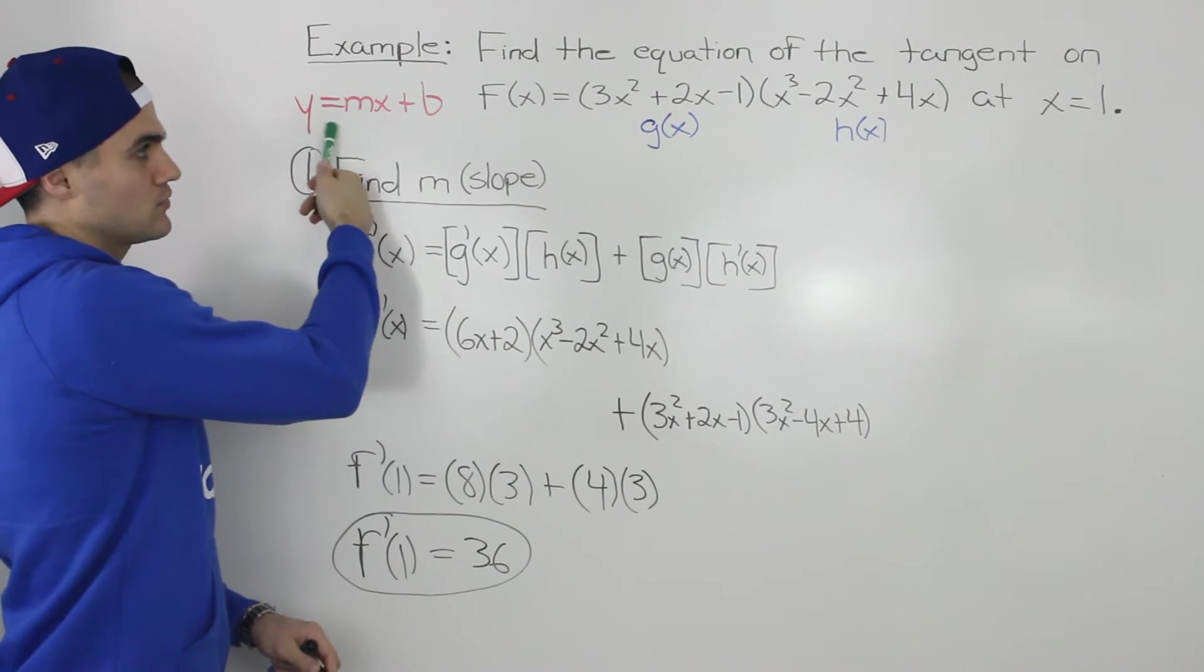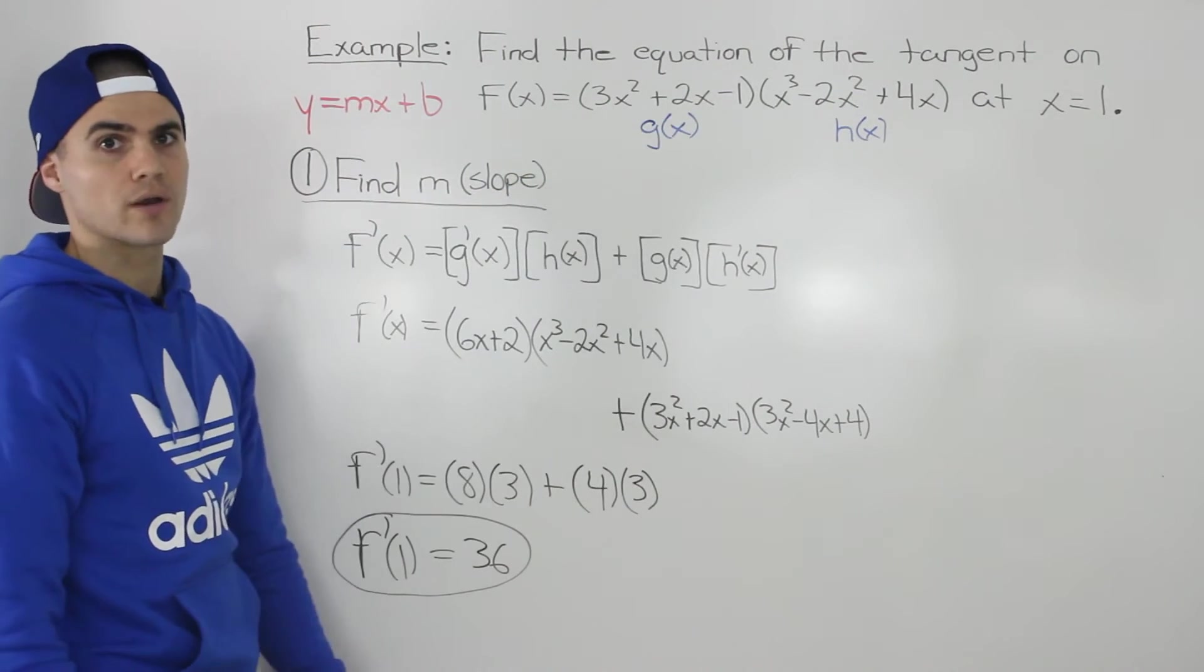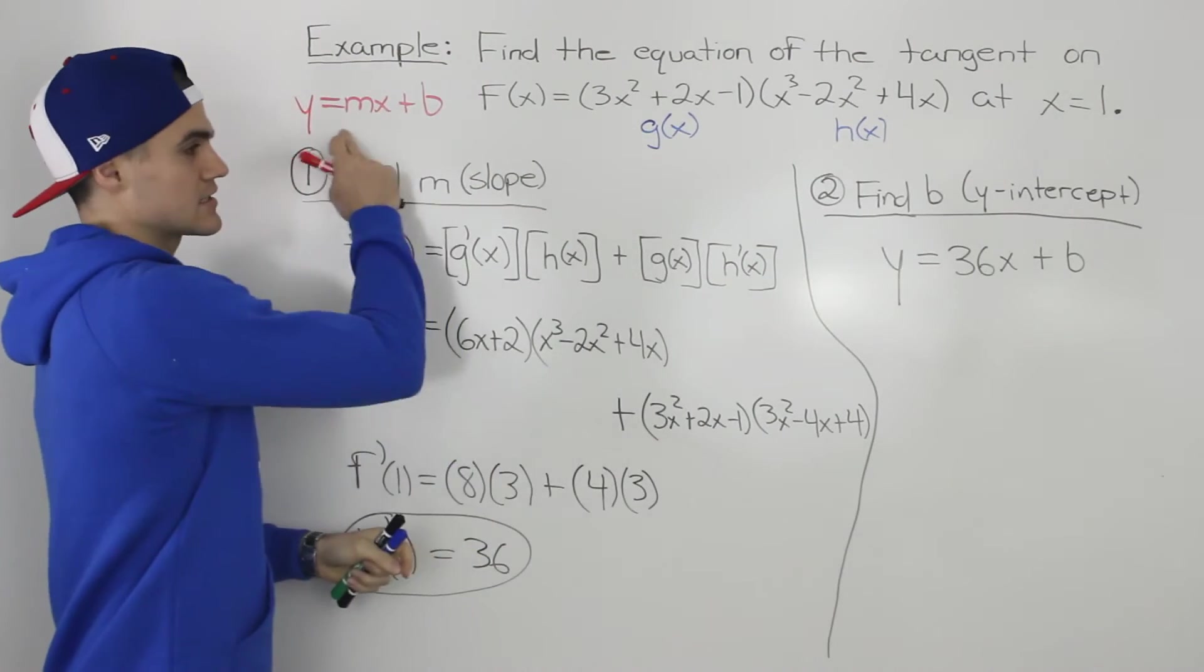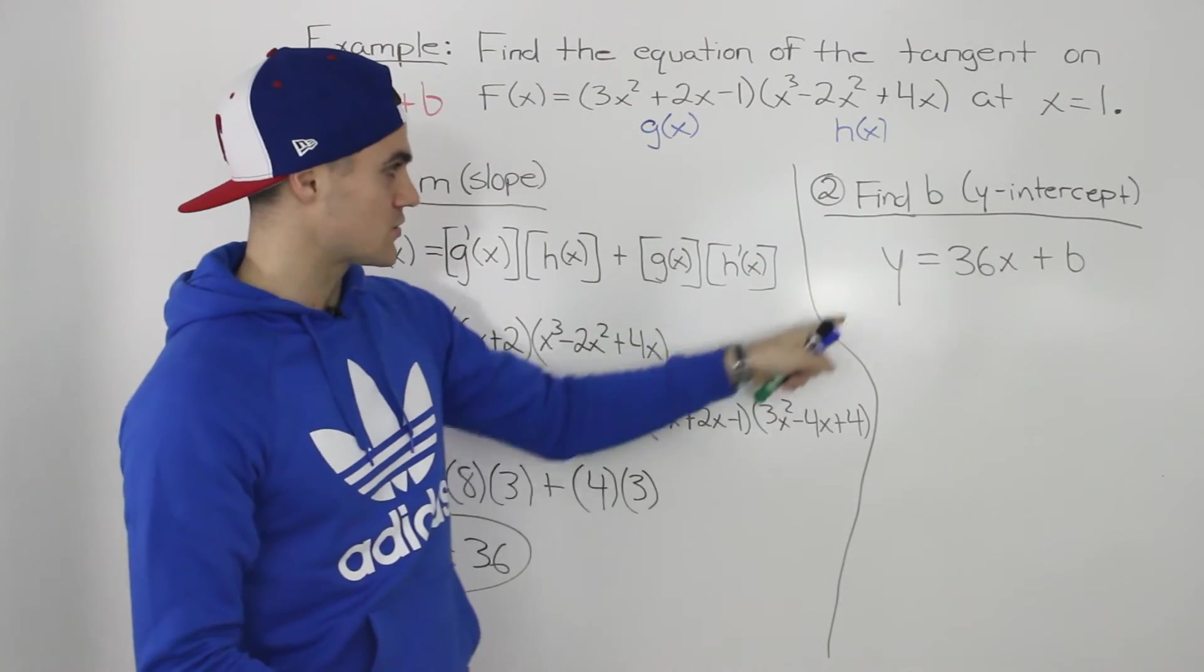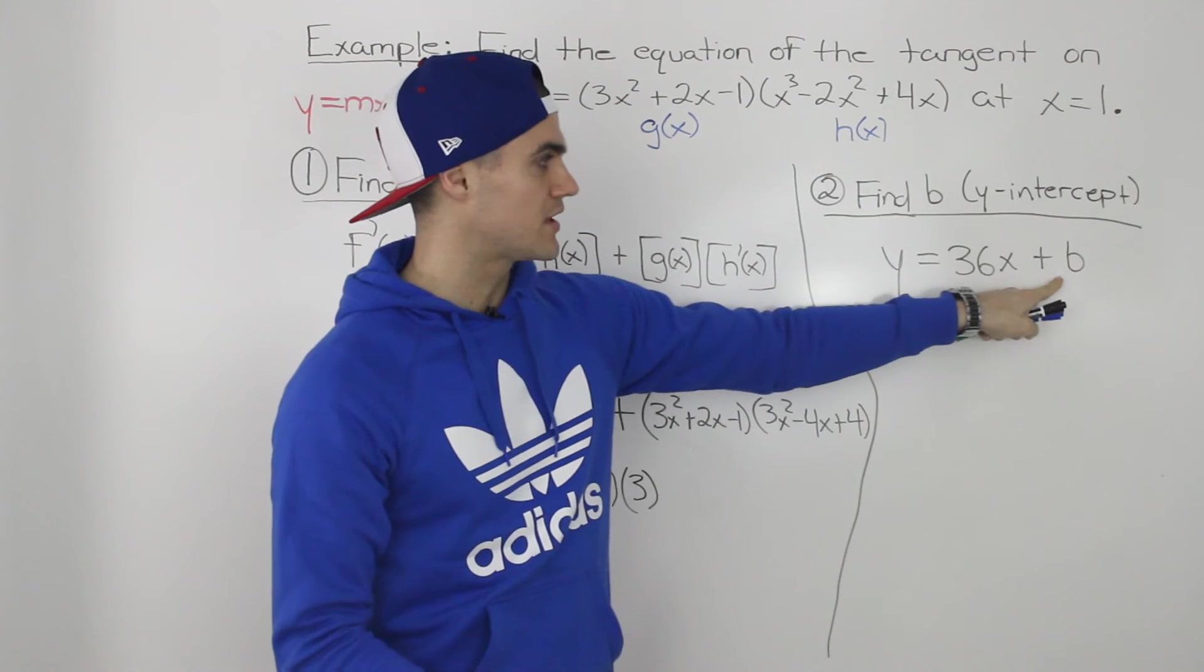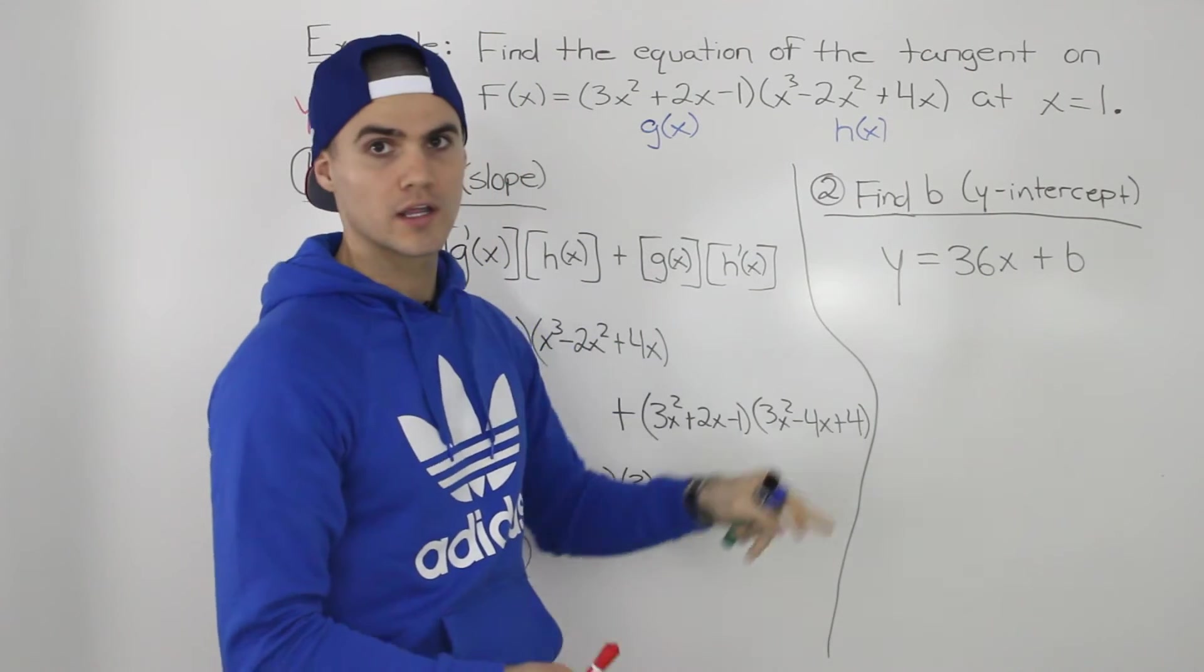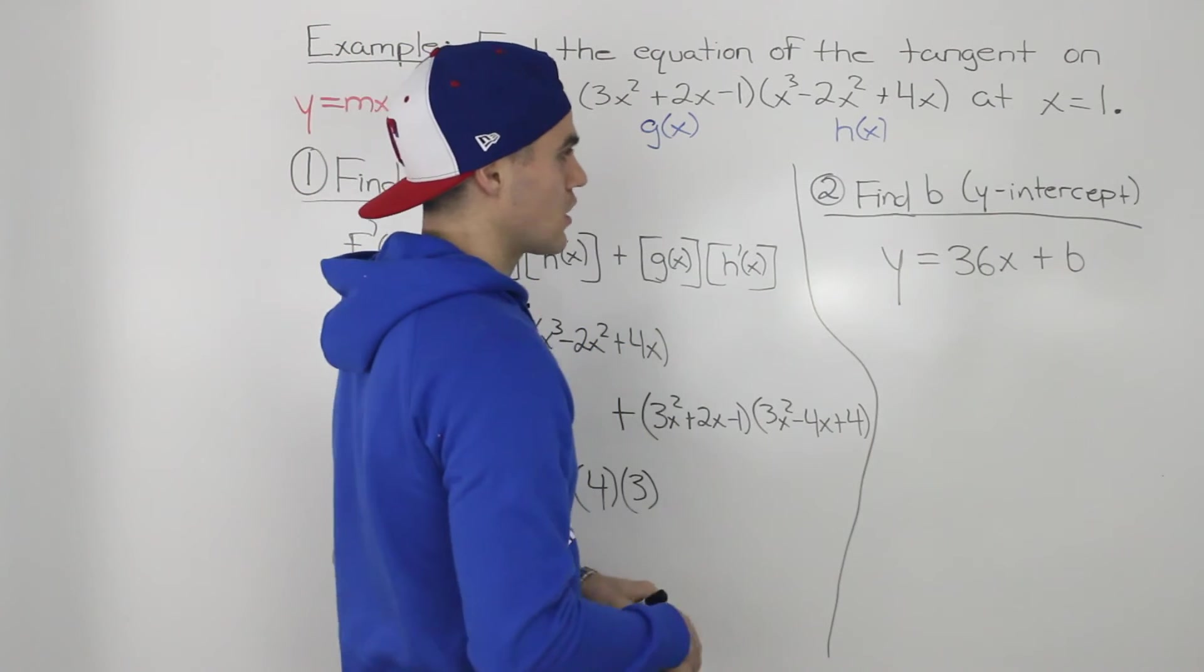We are done step one. We found the slope, the m value of this tangent at x equals 1. Next step is we have to find the b value in this linear equation of the tangent. We already have the slope, which is 36, so we got y equals 36x plus b. Now to solve for that b value, we need a coordinate on the line that we could plug in for x and y.